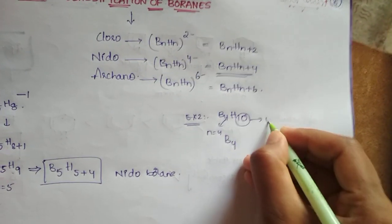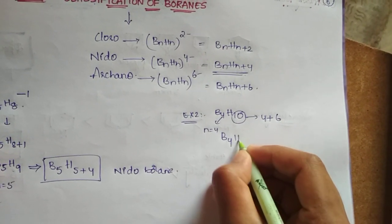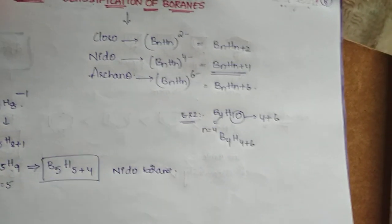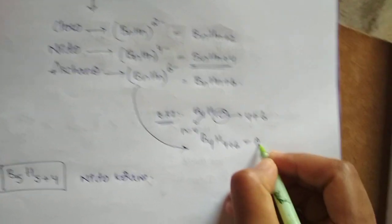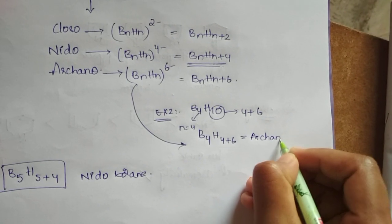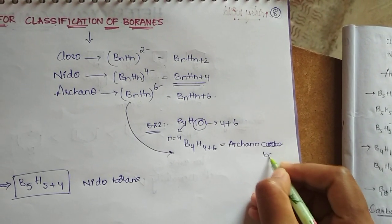Now H4 plus 6. Then what will happen? It is in the form of Arachno, right? So it is an example of Arachno boranes.